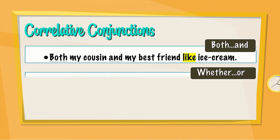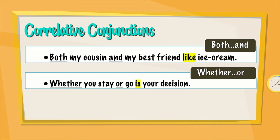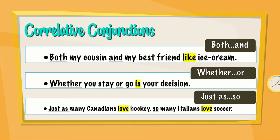Whether or: whether you stay or go is your decision — "is" being the verb, in the third person singular, because it's describing "your decision". Just as so: just as many Canadians love hockey, so many Italians love soccer. "Love" is the verb — plural form for many Canadians, and again plural for many Italians, so the verb stays in the plural form: love.